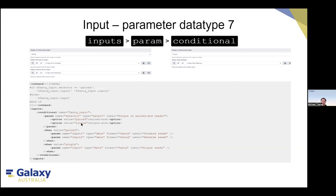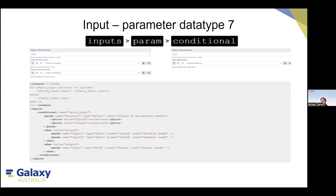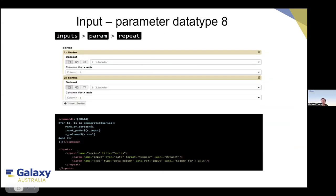In the XML for the conditional: inside the inputs tag, you define a conditional flag with a name. You include options — similar to what we've seen before — plus additional 'when' sections. If the user selects 'pair', provide two inputs: one forward and one reverse. If the user selects 'single', provide only one input parameter. This immediately avoids human error and applies in many different situations beyond just paired/single-end reads.